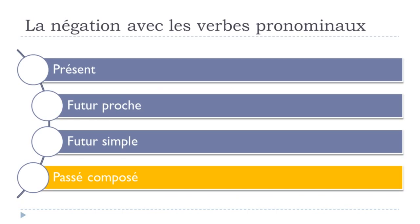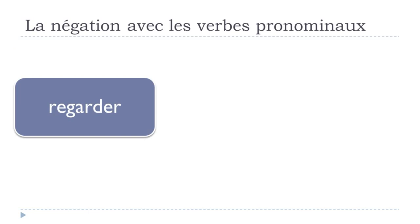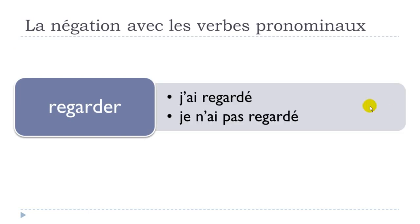Le passé composé is quite tricky because it's a compound tense. For REGARDER, it goes J'AI REGARDÉ. For the negative form, you start with JE, then put NE — noting that the E elides before the vowel — then the auxiliary AI, then PAS, then REGARDÉ. So: JE N'AI PAS REGARDÉ.